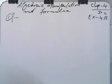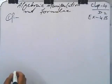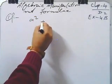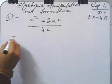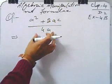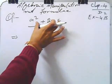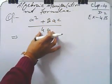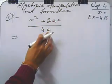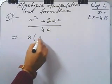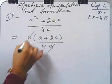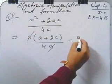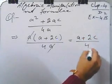Question number 1: a² + 2ac divided by 4a. We have to take common from the numerator. Take common a, so you get a(a + 2c) divided by 4a. The a cancels, and your result is (a + 2c) divided by 4.